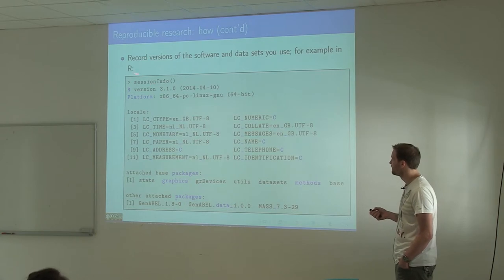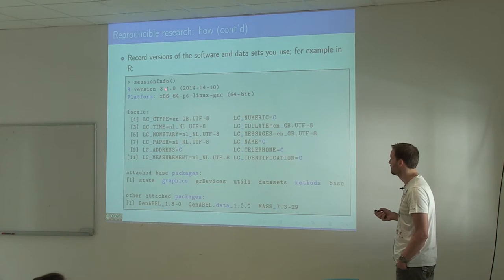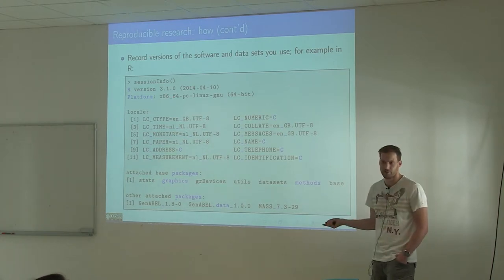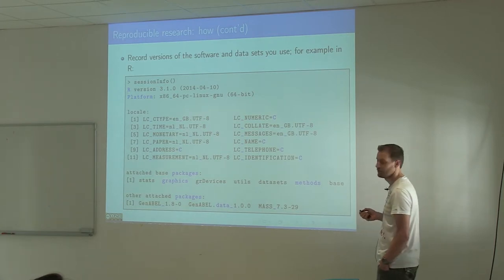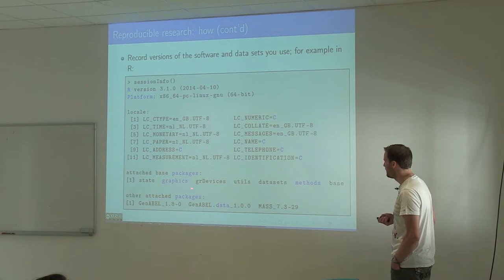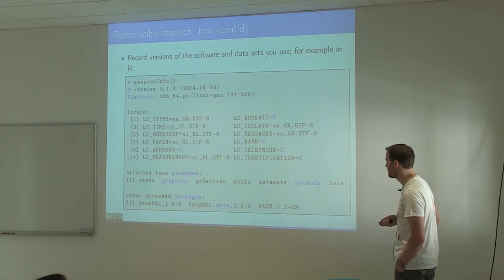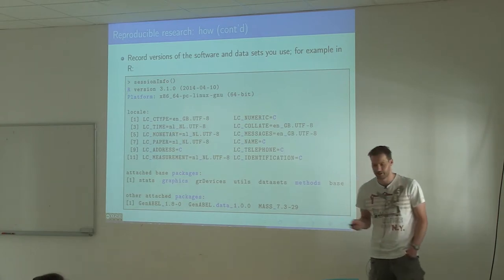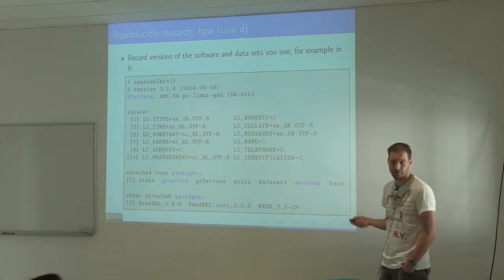If you're in R, for example, this command will tell you everything you need to know: R version 3.1, it was run on a Linux computer of a certain processor type, because even there you can make the same program, the same code can give different results sometimes if you run it on a different processor. Here we see the packages and the versions of each of the R packages that was loaded. Basically put this somewhere in your script and save the output together with the script or with the results.